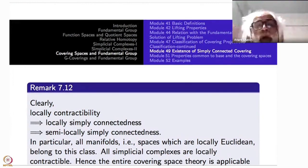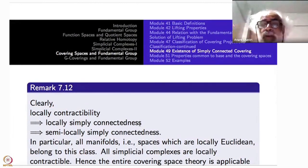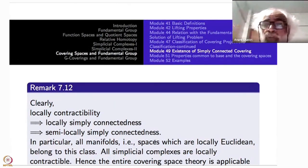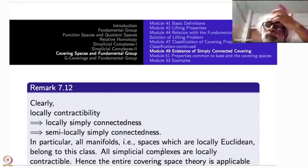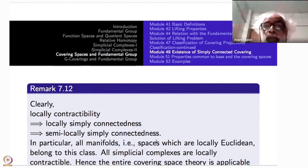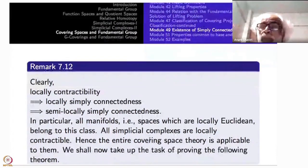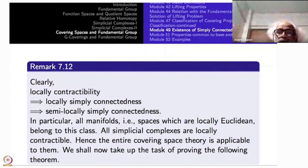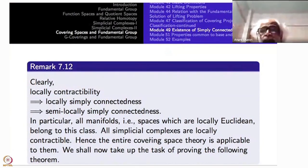Manifolds, simplicial complexes, and CW complexes all have this property of semi-local simple connectivity, so the entire covering space theory is applicable to these spaces. So let us prove the following theorem: a connected, locally path connected, semi-locally simply connected space admits a simply connected covering space.